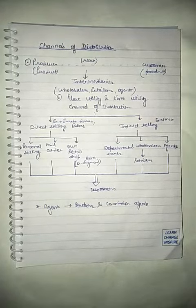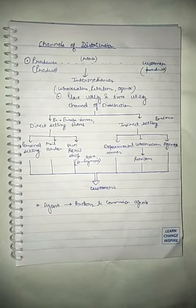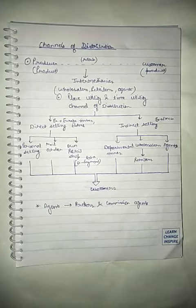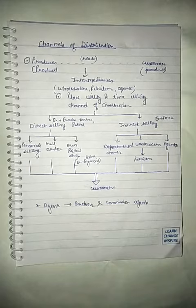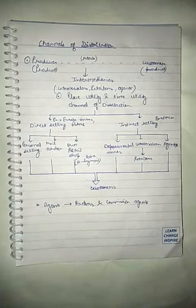Now, the second point I have mentioned here is the place utility and time utility. That is, it is providing utility in terms of place and time to the consumer. Now, the question is how? Channels of distribution help the movement of goods from one place to another, and thus